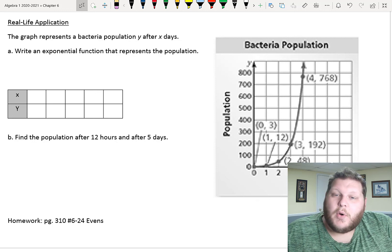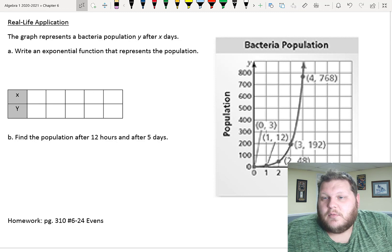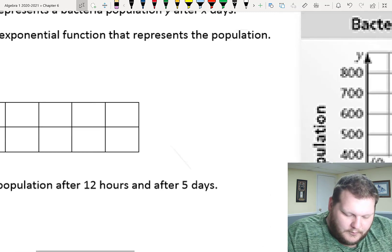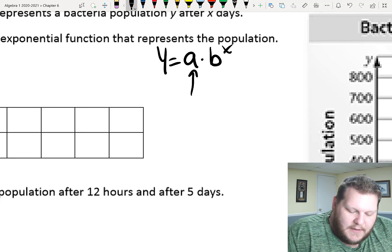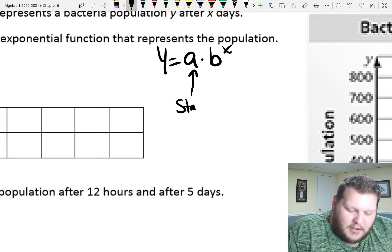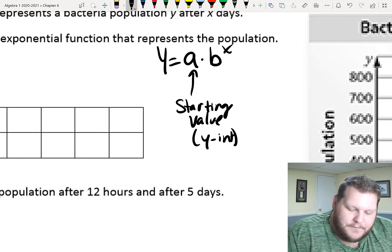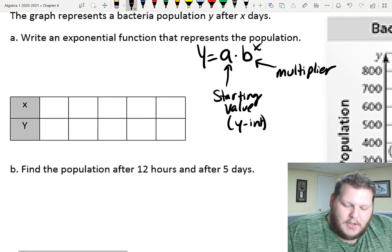If we're trying to write the equation, which is what we're asked to do in part a, we need two different things. We need the starting value, and we need the multiplier. So, if we go back to what our equation looks like, y equals a times b to the x power. Again, this y-value, or this a-value, is our starting value, which was our y-intercept. This b-value is my multiplier.